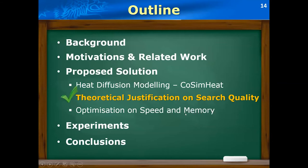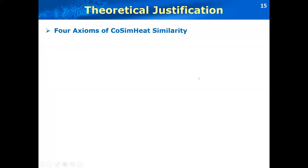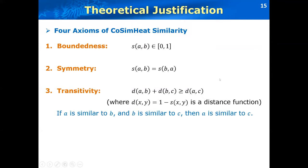Next, we provide theoretical justifications on the search quality. We have proved that our proposed cosine heat similarities satisfy the following four properties. The first one is the boundedness. The similarity score of cosine heat is between zero and one. The second is symmetry. And the third one is transitivity. That is, if we denote the distance function between the two nodes as one minus the cosine heat similarity score, then this distance function will satisfy the following triangle inequality, which has the intuitive meaning that given any three nodes in the graph ABC, when A is similar to B, B is similar to C. This implies that node A is also similar to C.